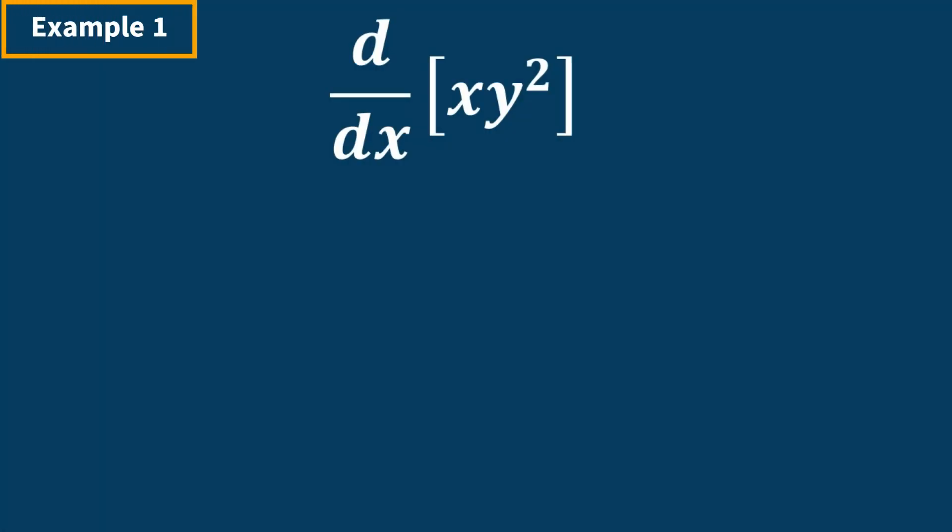Example number one, we want to find the derivative of xy squared. We're taking the derivative with respect to x. So looking at this problem, it looks like we're going to need to use the product rule. If you need help using the product rule, click on this link. I made a video on it. So let's begin. We're going to start by keeping the first term the same, and then we're going to take the derivative of the second term, which in this case is y squared.